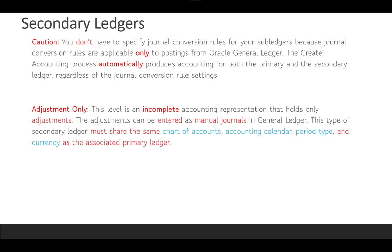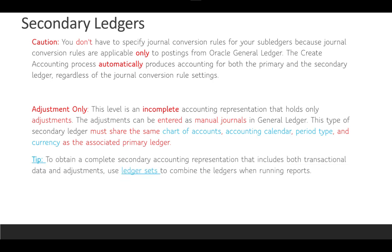The fourth level is Adjustment Only — an incomplete accounting representation that holds only adjustment entries, which can be entered as manual journals. This type of secondary ledger must share the same chart of account, accounting calendar, period type, and currency as the associated primary ledger. To obtain a complete secondary ledger accounting representation that includes posted transactions and adjustments, you use a ledger set to combine the ledgers when running reports.